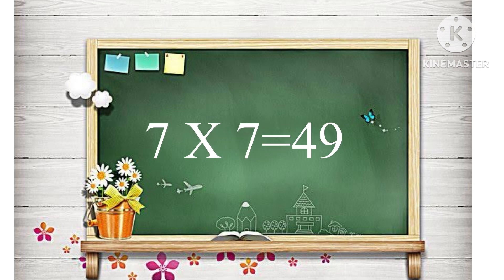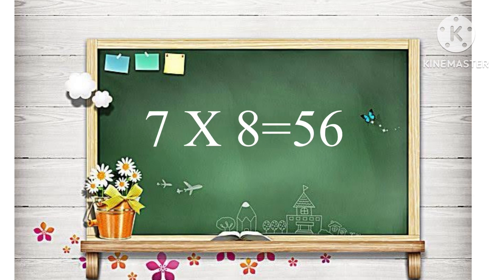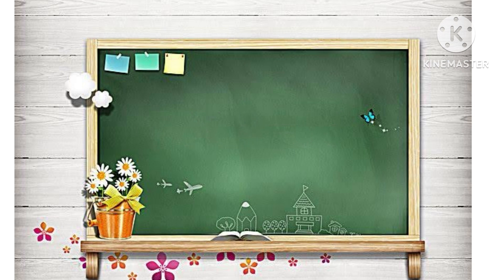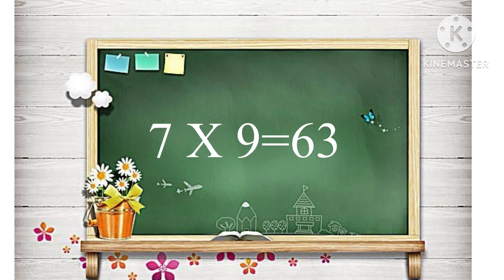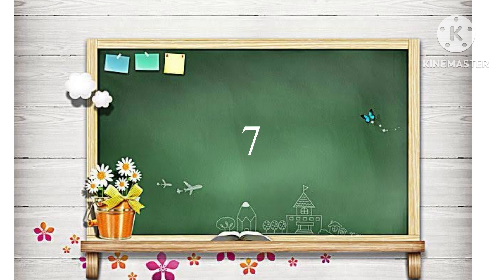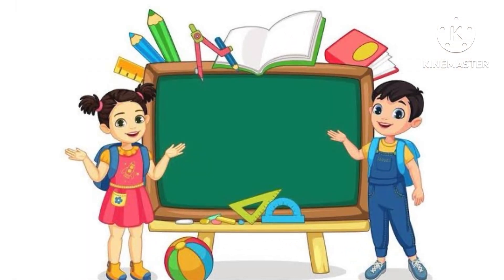7 sevens are 49. 7 eights are 56. 7 nines are 63.